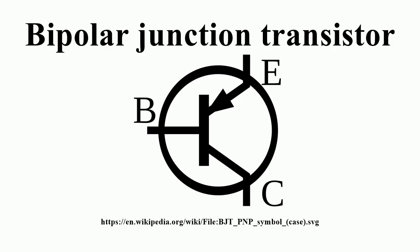The heterojunction bipolar transistor is an improvement of the BJT that can handle signals of very high frequencies, up to several hundred GHz. It is common in modern ultra-fast circuits, mostly RF systems. Heterojunction transistors have different semiconductors for the elements of the transistor. Usually the emitter is composed of a larger bandgap material than the base. This difference in bandgap allows the barrier for holes to inject backward from the base into the emitter.